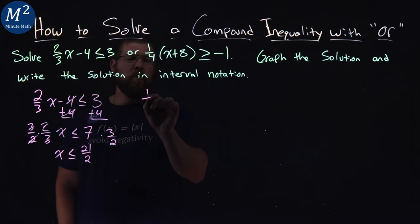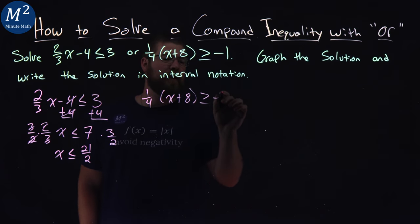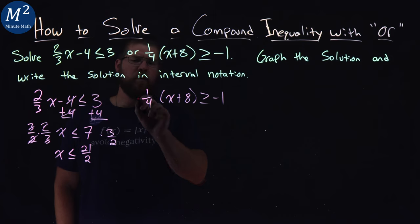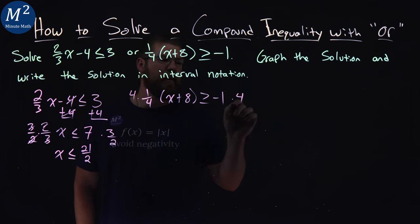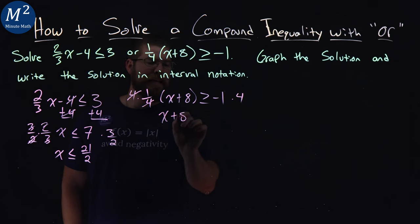Now, the second one. We have 1 quarter x plus 8 is greater than or equal to negative 1. To get rid of the 1 quarter, I'm multiplying both sides by 4. 1 fourth and 4 cancel. We have x plus 8 here.